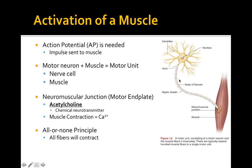Once an impulse or action potential is sent down, it causes the muscle to contract. It's this impulse that stimulates the release of acetylcholine, which causes the release of calcium for the muscle contraction.